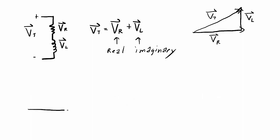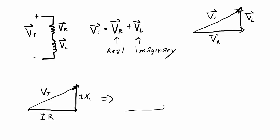Let me redraw this voltage triangle, labeling the vectors with only their amplitudes. The voltage along the base is the voltage across the resistor, which equals the current times the resistance. For the inductor, it's the current times the reactance XL. The total voltage magnitude is Vt. If I multiply all of these by I, I get the same triangle shape but with different magnitudes: I²R along the base, and I²XL going straight up.